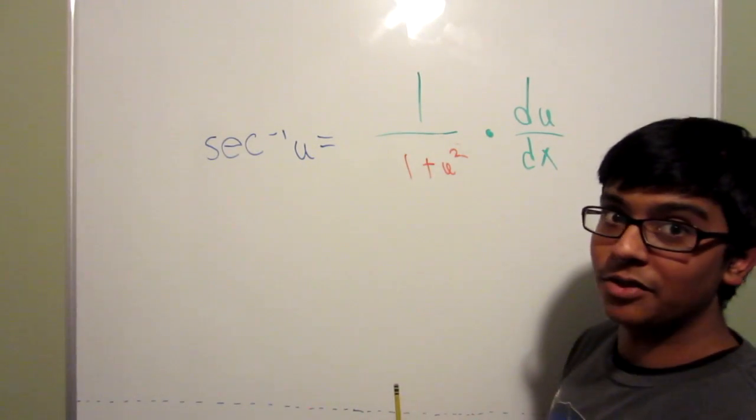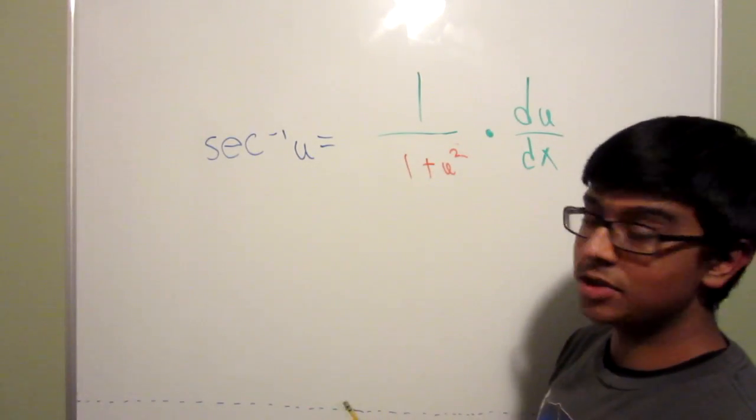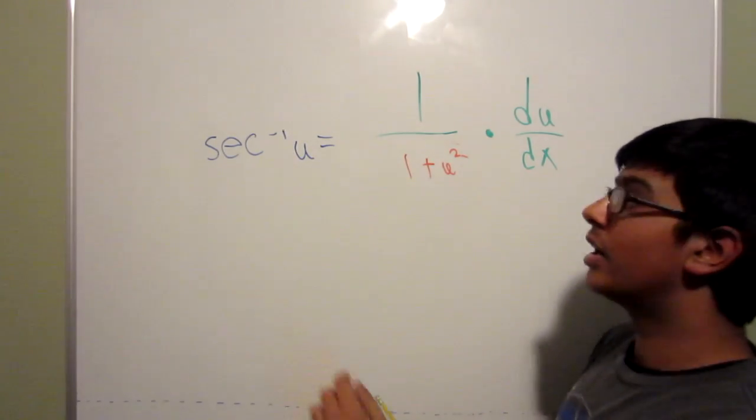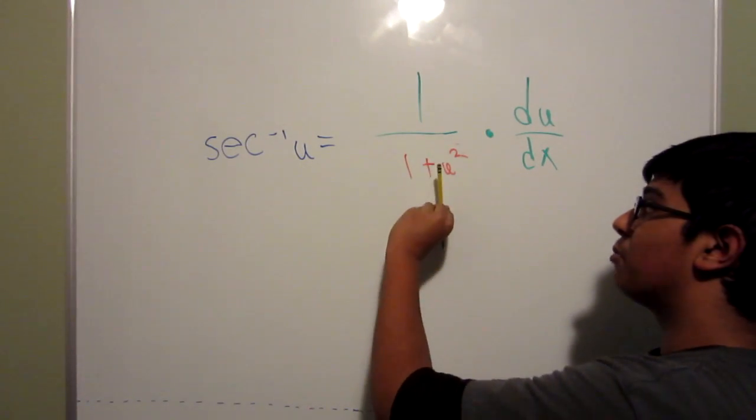For the last part of the shortcut, and if you thought the last one was weird, this is where everything gets pretty crazy. Now what you do to remember the secant inverse of u is you take the root that you moved into the positive sign, flip it back out.